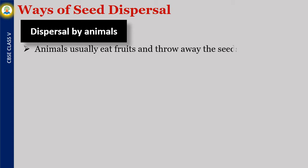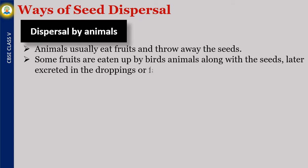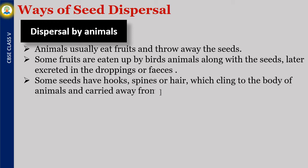Dispersal by animals. Animals usually eat fruits and throw away the seeds. Some fruits are eaten by birds and animals along with the seeds, which are later excreted in the droppings or feces. Some seeds have hooks, spines, or hair, which cling to the body of animals and are carried away from the parent plant. Examples are xanthium hooks and spear-grass spines.